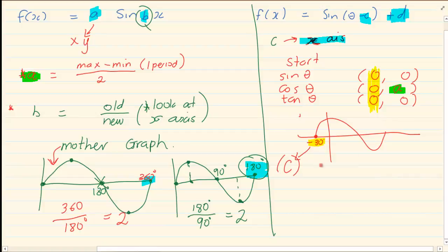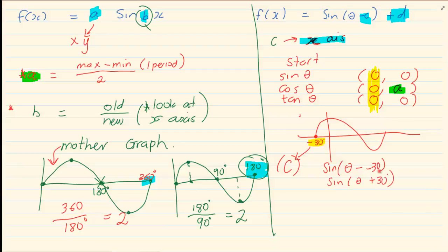So your C now becomes, it should have been on 0, it is starting on minus 30. So this becomes your C. What do I end up with? If you take the equation, it would have been sin theta minus. Remember, the equation has a minus. And then I am on minus 30. So you would write sin theta plus 30.